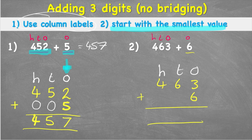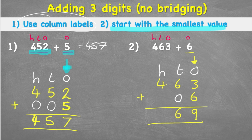For the second number, 6, I have six ones. I put my equals line and addition sign. Starting from the smallest value — the ones column — I'll do 3 add 6 on my fingers: three, four, five, six, seven, eight, nine — so the answer is 9. In the tens column, 6 add zero is 6, and in the hundreds column, 4 add zero is 4. So 463 plus 6 equals 469.